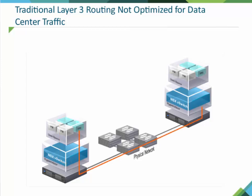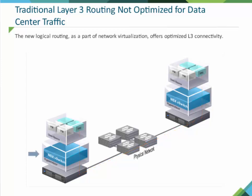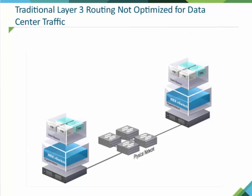Traffic may also be between two virtual machines on two different sides of the data center. The new logical routing, as part of network virtualization, offers optimized L3 connectivity — traffic between two virtual machines on the same host is routed locally without leaving the host.